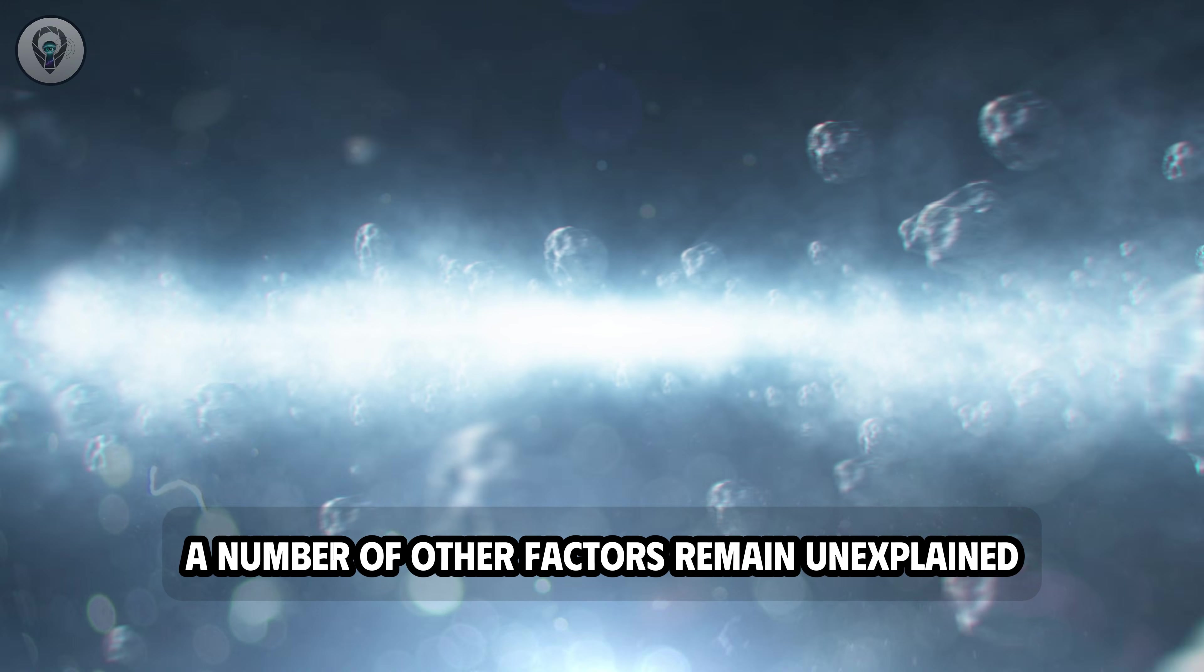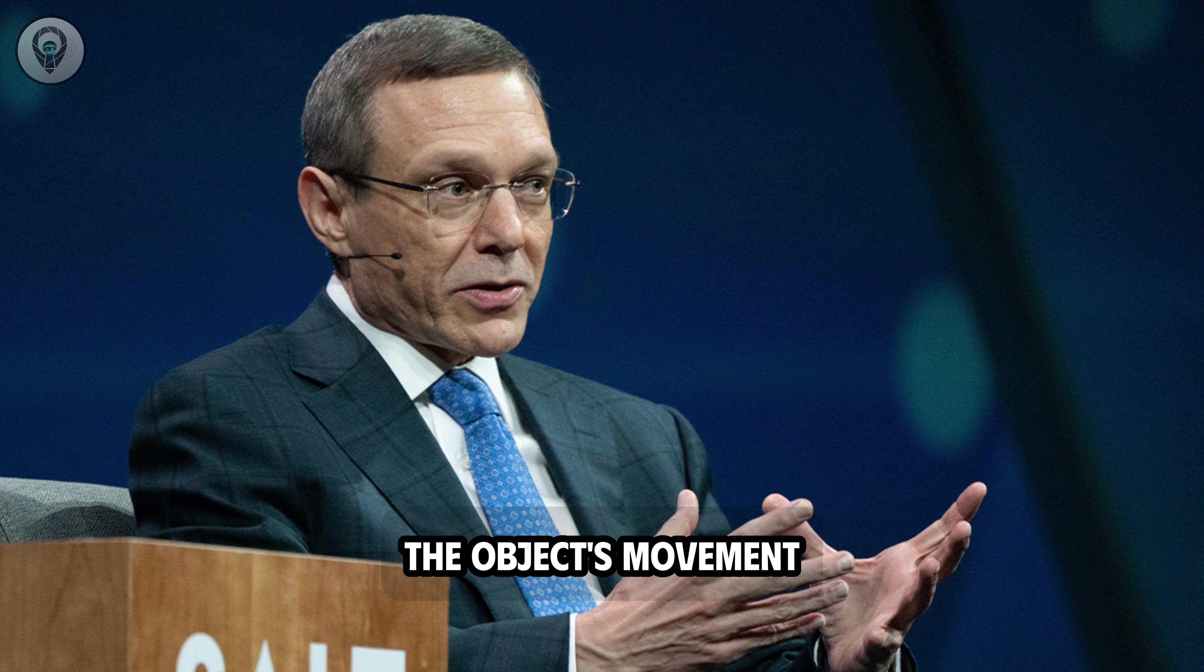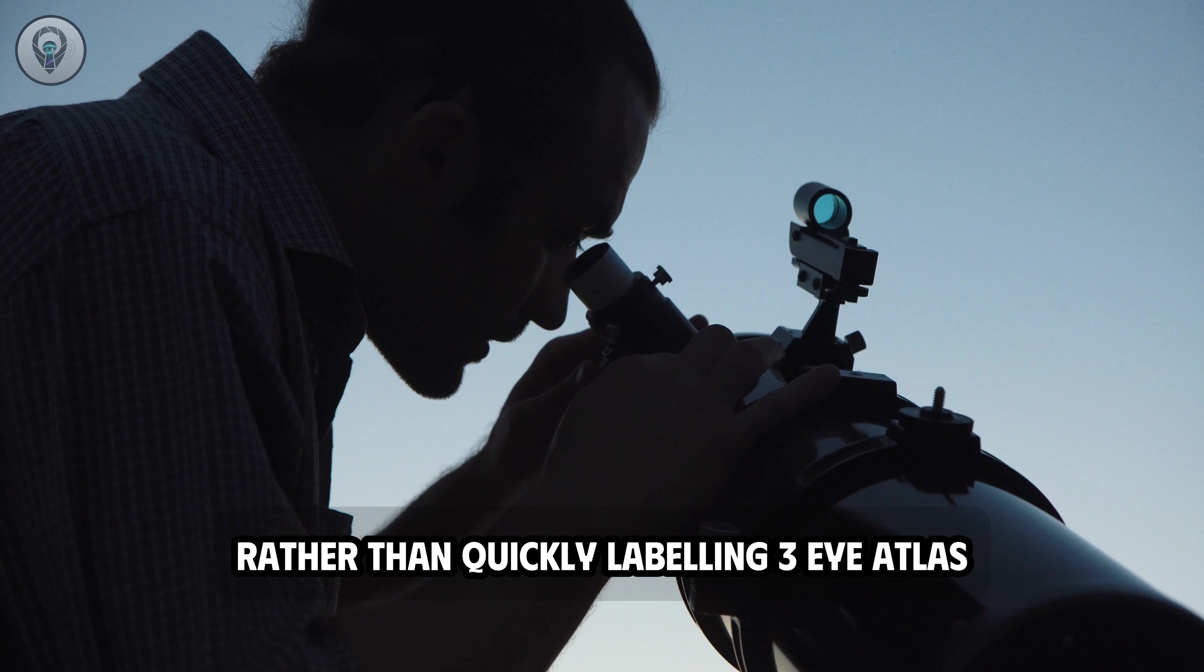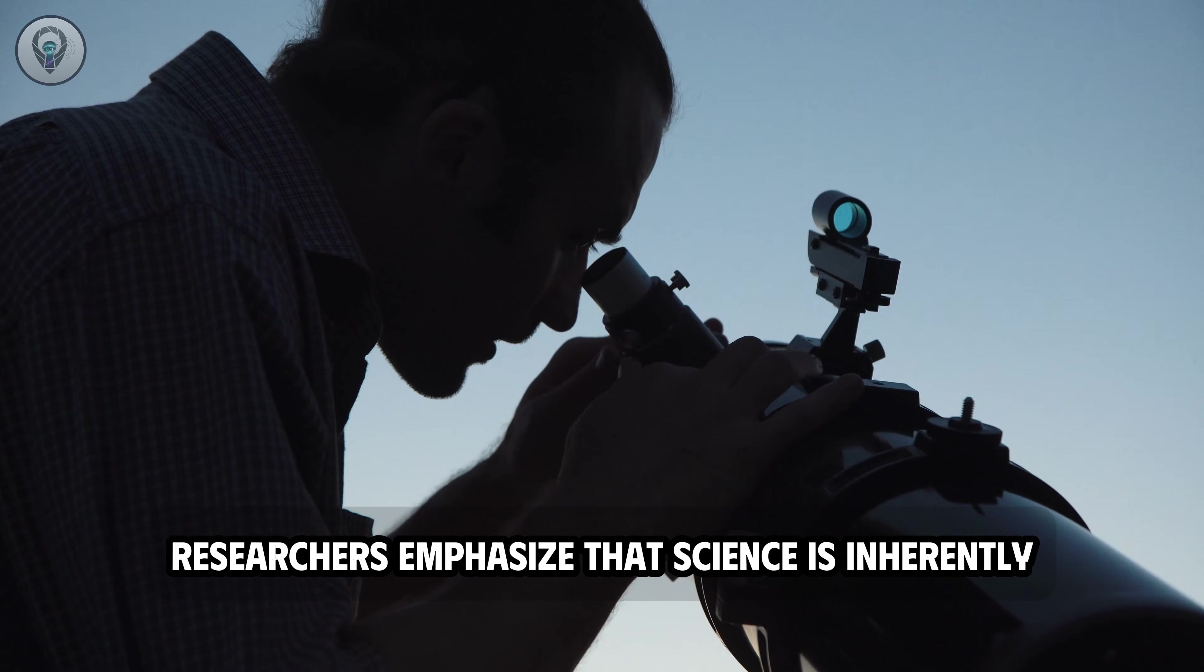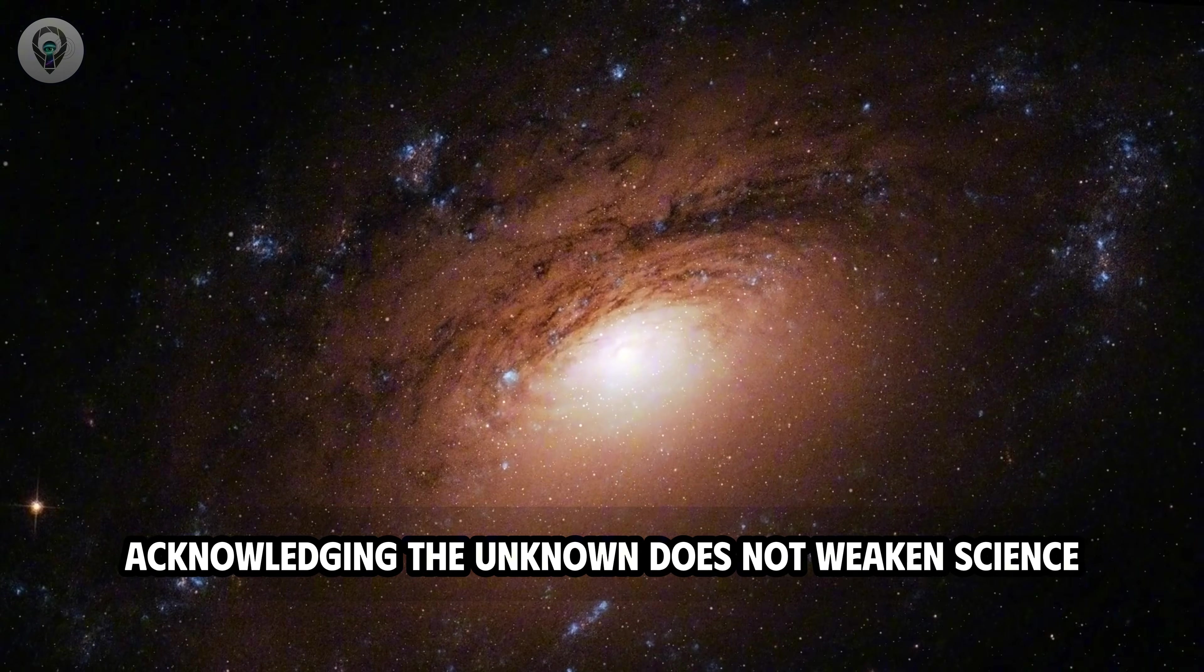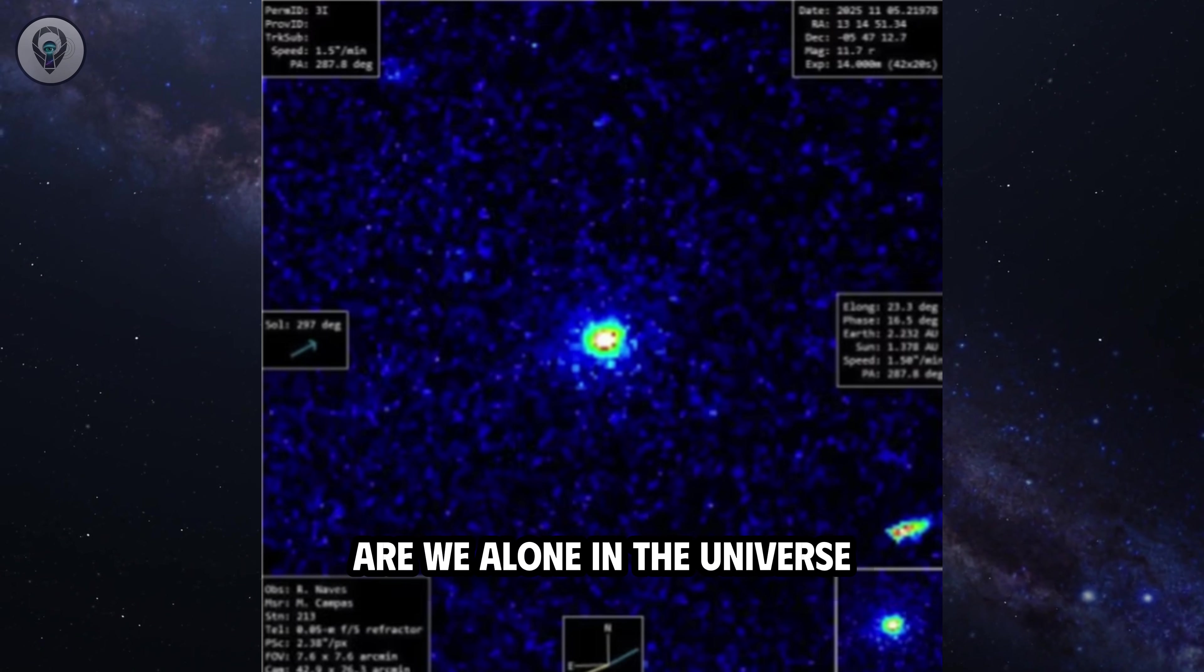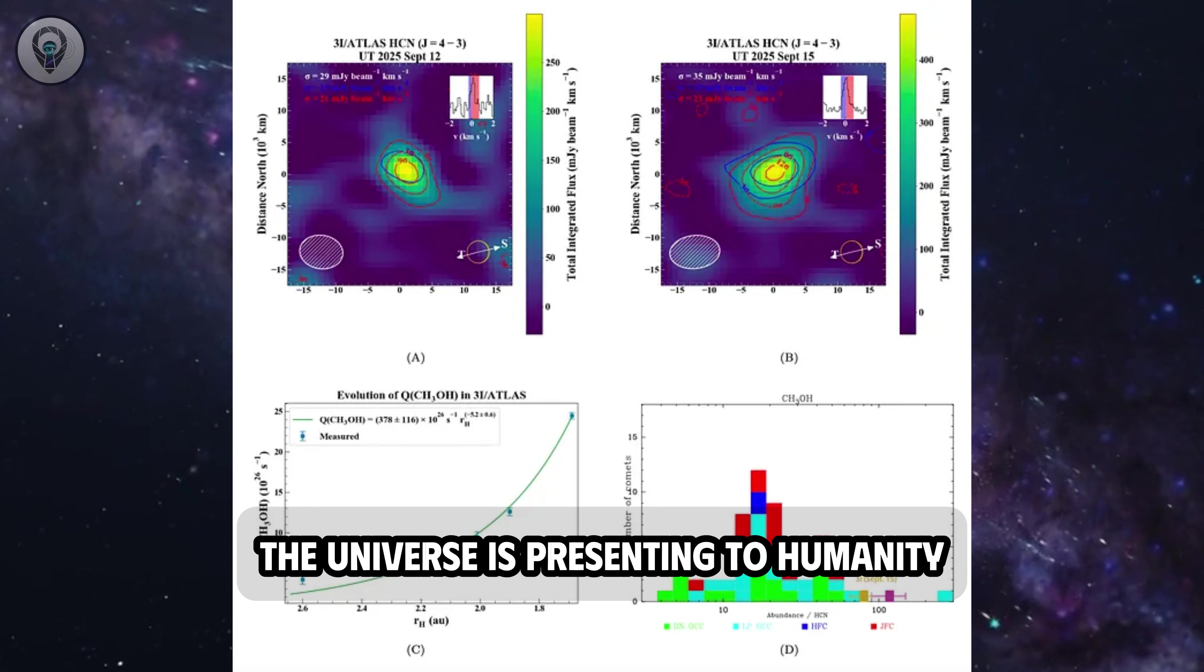Furthermore, a number of other factors remain unexplained, including the phenomenon of the tail pointing in the opposite direction towards the sun, the object's movement almost coinciding with the orbital plane of planets and the unusual jet streams. Many argue that these aspects should have been openly discussed as scientific enigmas, rather than quickly labeling 3i Atlas as a typical comet. In this context, researchers emphasize that science is inherently a continuous process of questioning and seeking answers. Acknowledging the unknown does not weaken science. On the contrary, it is the driving force behind its funding and development. Especially with fundamental questions like, are we alone in the universe? Ignoring or downplaying anomalous phenomena could mean missing the most crucial clues the universe is presenting to humanity.